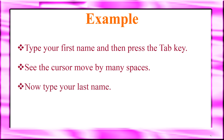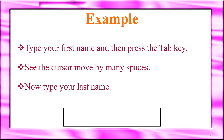Now type your last name. So if we are going to type two words — first name and last name — we type the first word, press the tab key, and then type the second word. The tab key creates a space between the two words. This is the purpose of the tab key.